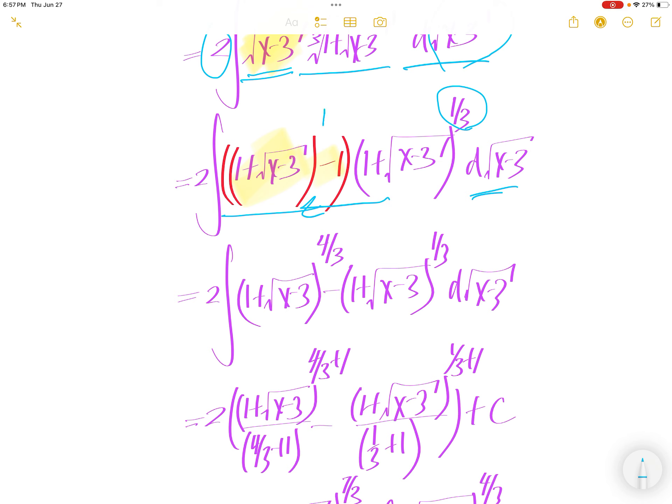Let us distribute that in. There is a 1 here. 1 plus 1 third is 4 over 3. And then this piece is over here.